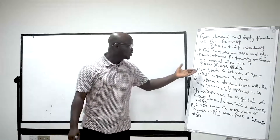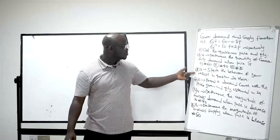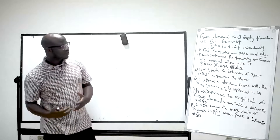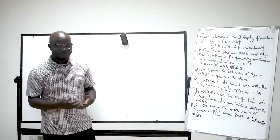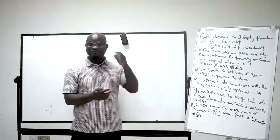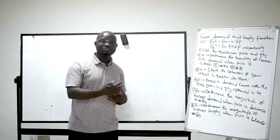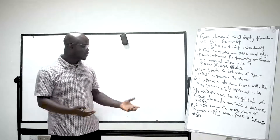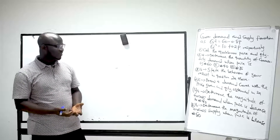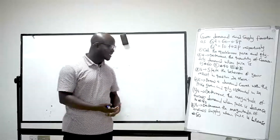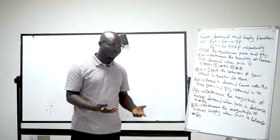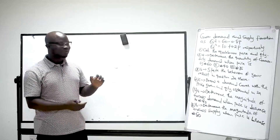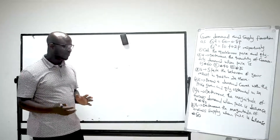The B part — number 2B — states: describe the behaviors of your result in question A above. And 2C: draw a demand curve with the price given and quantity obtained in 2A. We have been explaining what the demand curve is — it can be linear and non-linear. Question 3 asks to determine the magnitude of excess demand when price decreases to 40 Naira, and the magnitude of excess supply when price increases to 80 Naira — above equilibrium price gives excess supply, below gives excess demand.